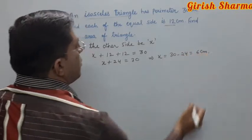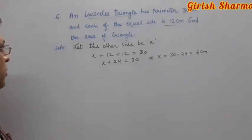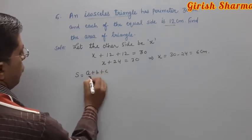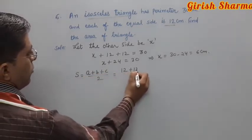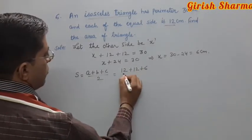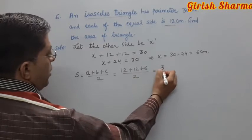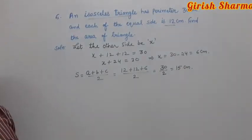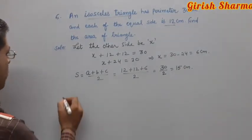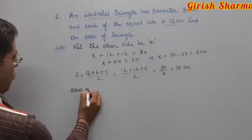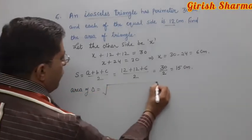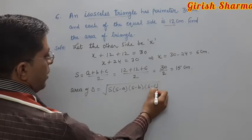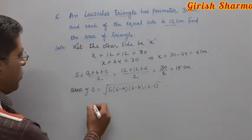Now find semi-perimeter: s equals a plus b plus c upon 2, where two sides are 12, 12, and third side is 6. So s equals 30 upon 2 equals 15 centimeters. Now apply Heron's formula: area equals under root of s(s minus a)(s minus b)(s minus c).